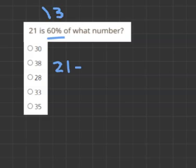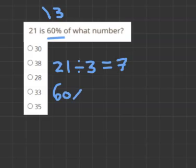So 21 divided by 3 will give us 7. And then 60% divided by 3 will give us 20%. So now I have to work out how to get to 100%.